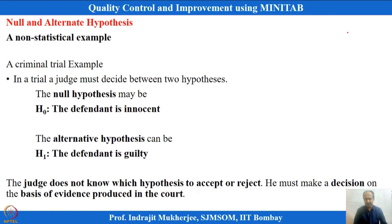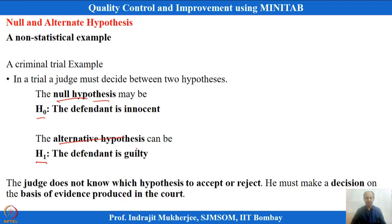When we write hypothesis testing, we have a null statement — also called void statement — denoted H-naught, and an alternate statement denoted H1. When a person is taken to court, the judge has to decide: either the person is innocent or the person is guilty. Initially, the judge assumes the person is innocent — that is the null hypothesis — and the alternate statement is that the person is guilty. This is a non-statistical example of how we define statements.